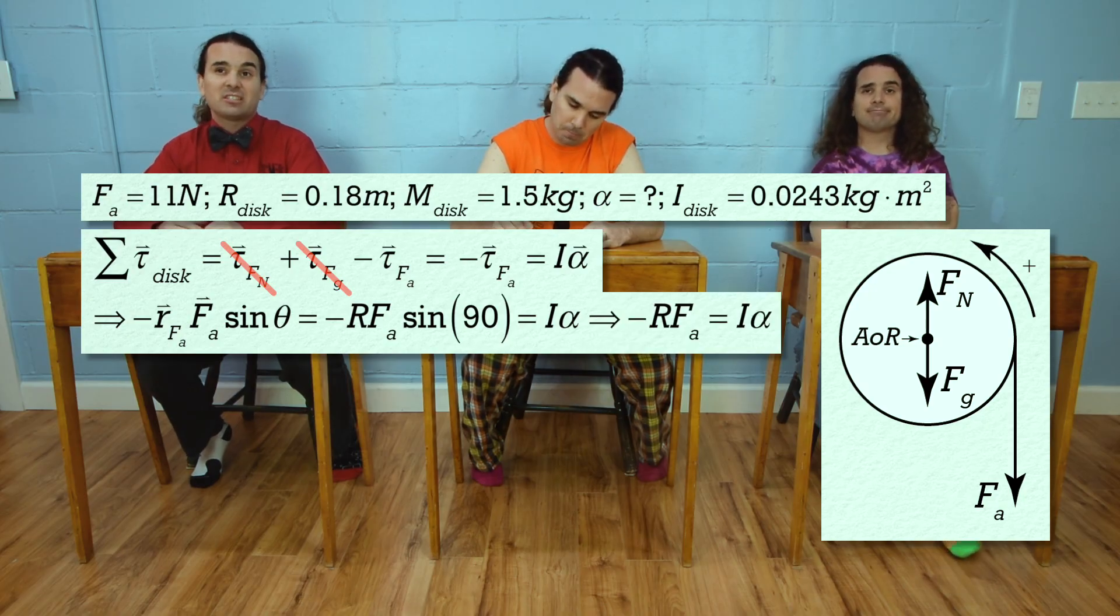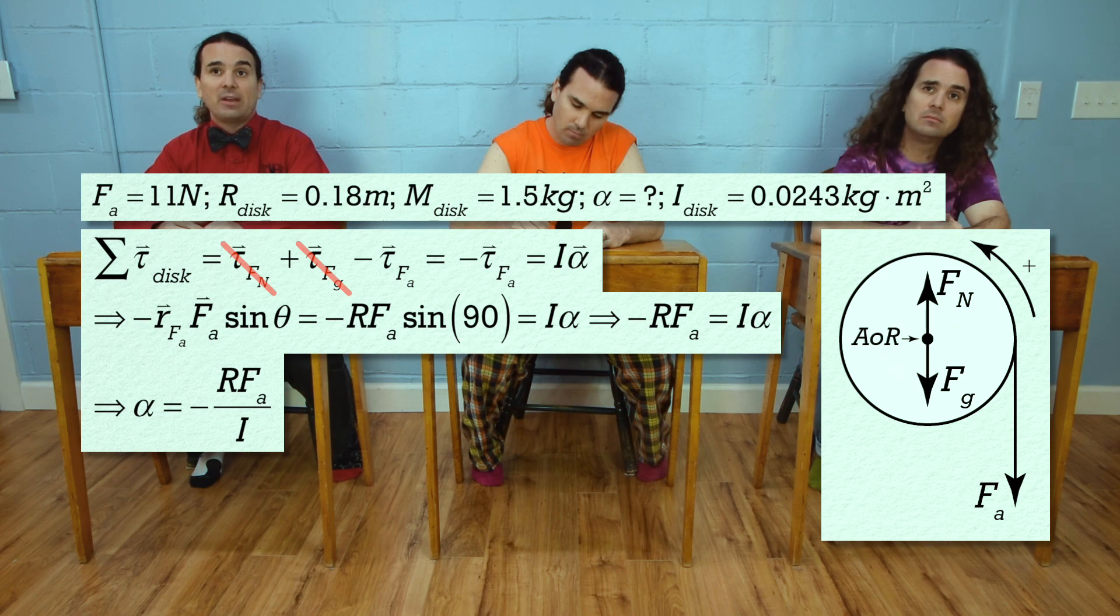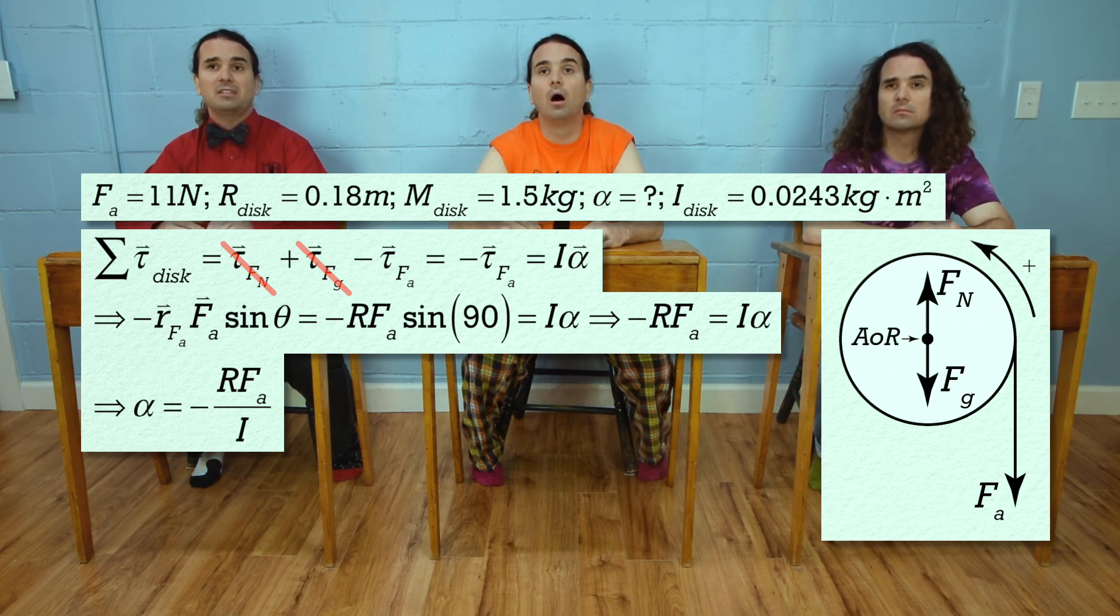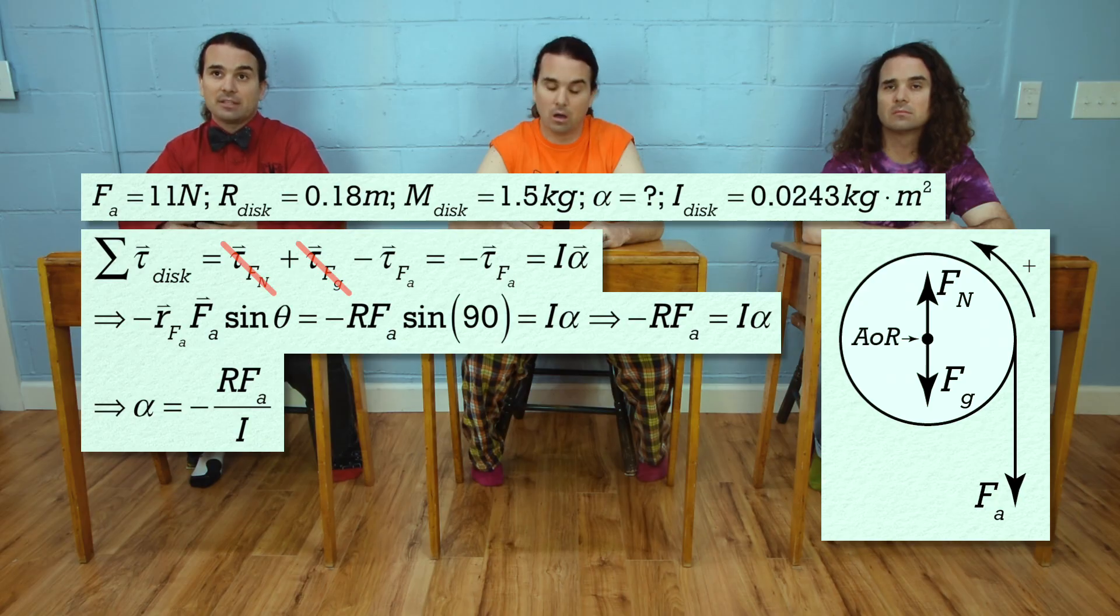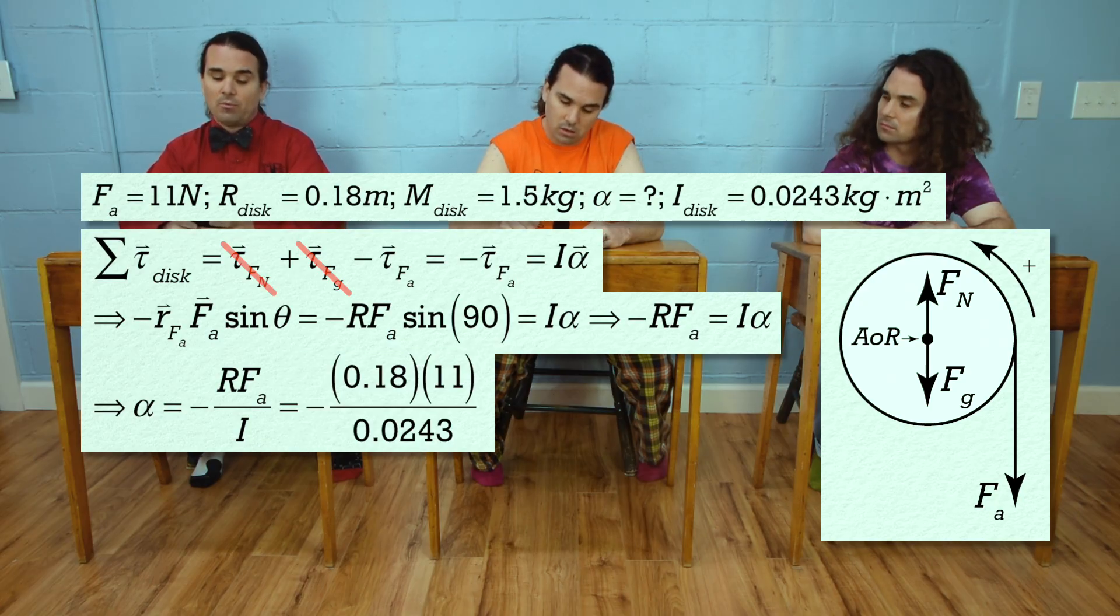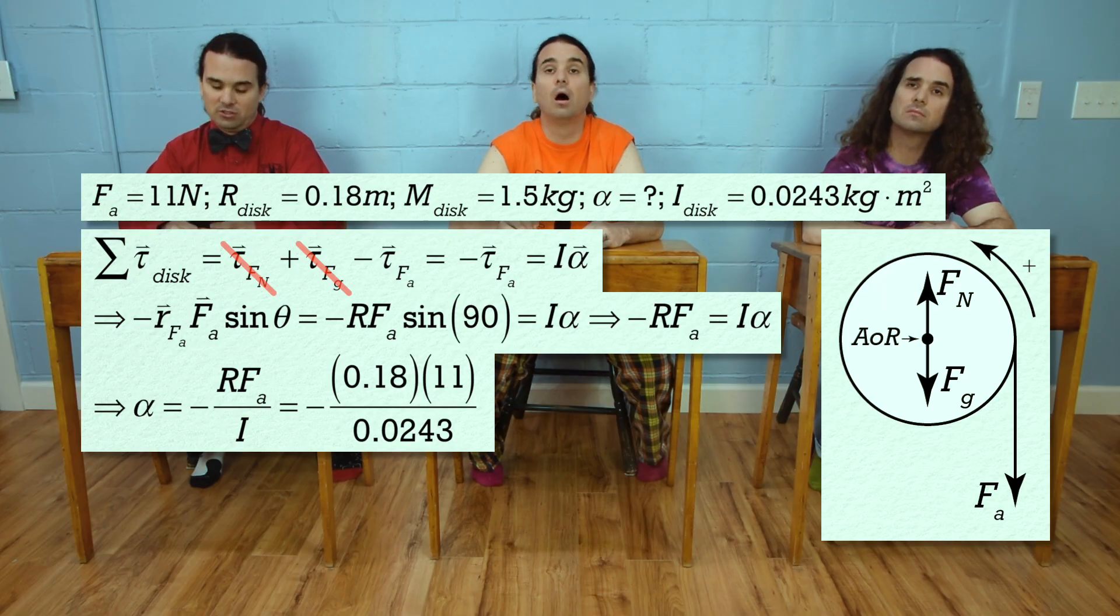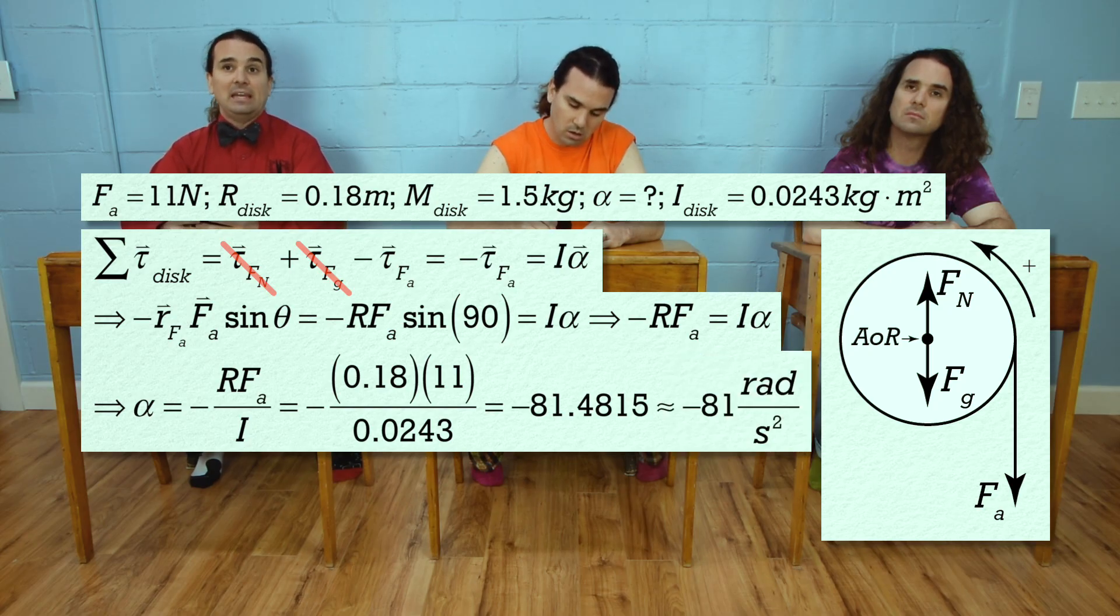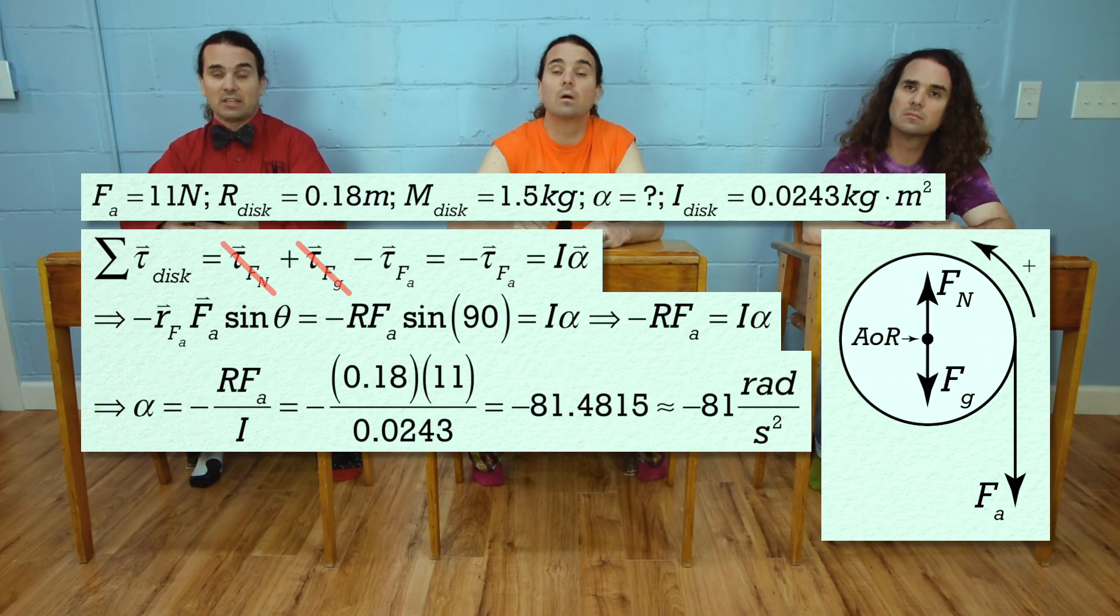That means angular acceleration equals the negative of the radius of the disk times force applied all divided by the rotational inertia of the disk. That equals negative 0.18 times 11 all divided by 0.0243 or negative 81.4815 or negative 81 radians per second squared with two significant digits.